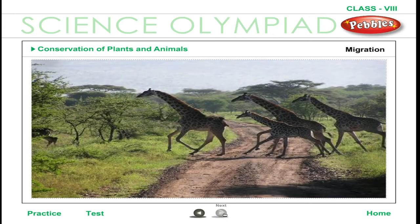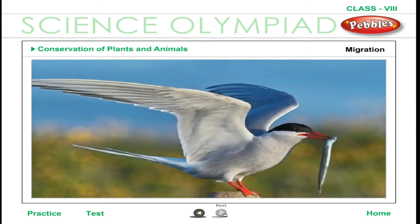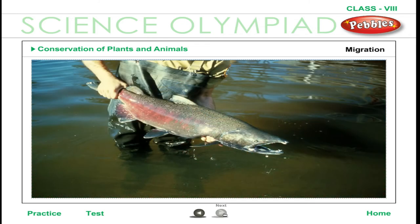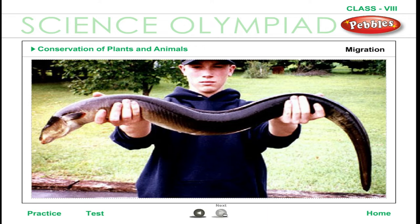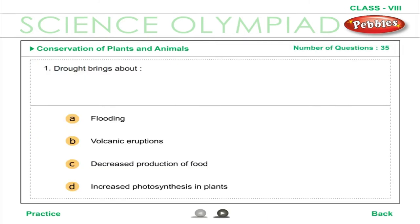Migration. Movement of animals in large numbers from one place to another to overcome unfavourable conditions is called migration. Migration often provides the migrating species with more favourable conditions of temperature, food, or water. For instance, birds of cold and temperate regions are known to migrate to warmer areas during winter. Migration also provides a suitable place for reproduction. For example, the salmon migrates from salt water to fresh water to lay eggs and comes back, while freshwater eels go to salt water from fresh water to lay eggs.